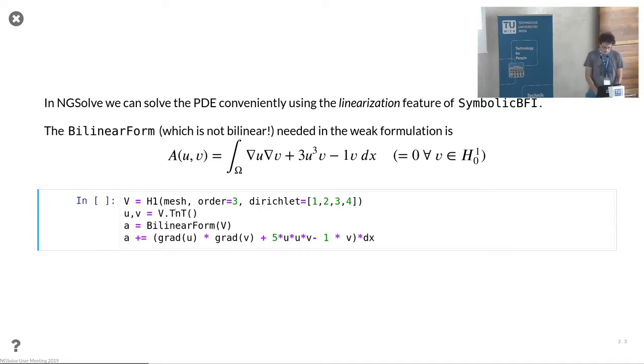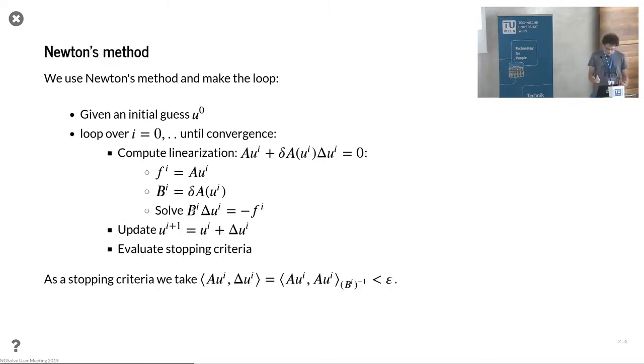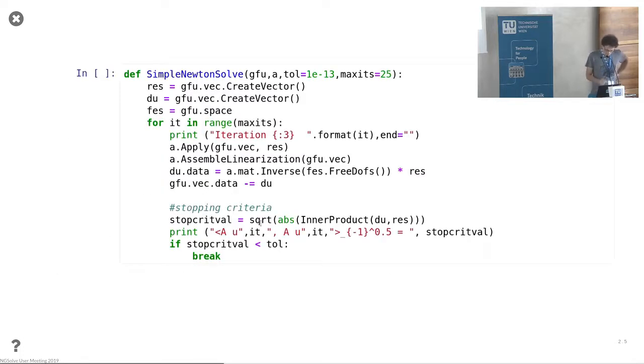So you write down the bilinear form with that expression, and obviously it's not a linear part anymore, so we have to linearize and we can apply Newton's method for that. So this is what you want to implement here. This is the implementation or a very prototype typical implementation.